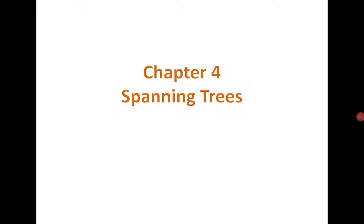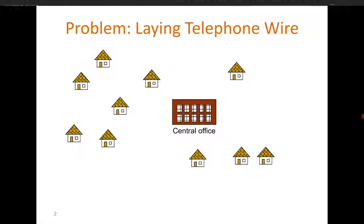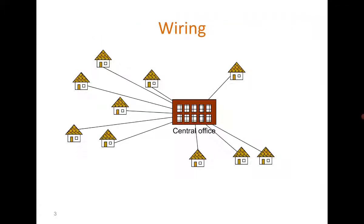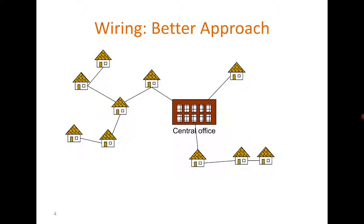Good morning everyone. Today we are going to talk about spanning trees. We have already discussed what a tree is — a tree is a connected graph with no cycles. We saw a problem where you can lay wires so that the central office is connected to all the houses. This is a spanning tree because we are covering all the houses, but this approach is quite expensive. We can think of a better approach using fewer wires, which leads us to minimum weighted spanning trees.